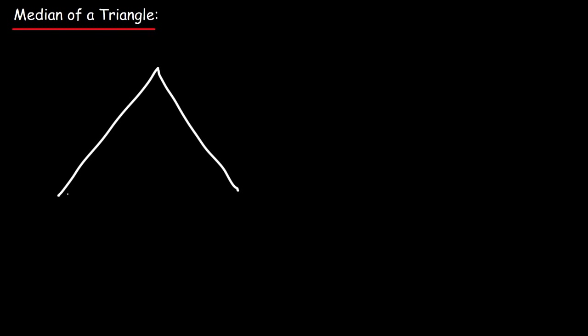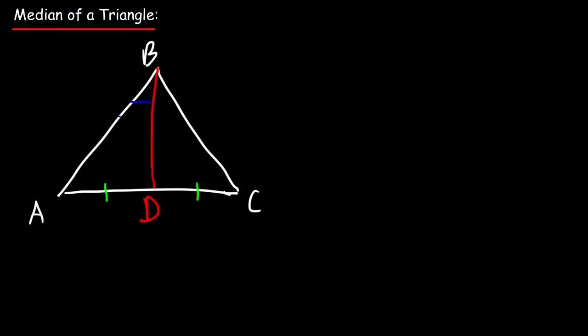You can see this same property another way: if we draw a median from vertex B in triangle ABC, the median bisects the opposite side at midpoint D. The area of the triangle on the left is equal to the area of the triangle on the right.